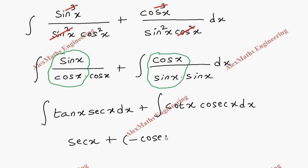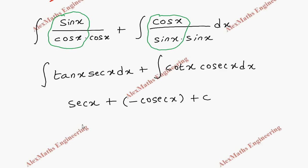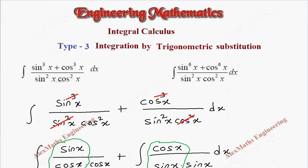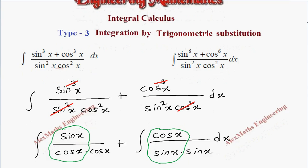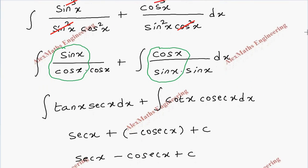So the final answer is sec x minus cosec x plus C. Now let's see the next problem, where we have sin⁶x plus cos⁶x divided by sin²x · cos²x. If you use a similar logic by dividing individually it will get complicated, so here we are going to do it a different way.